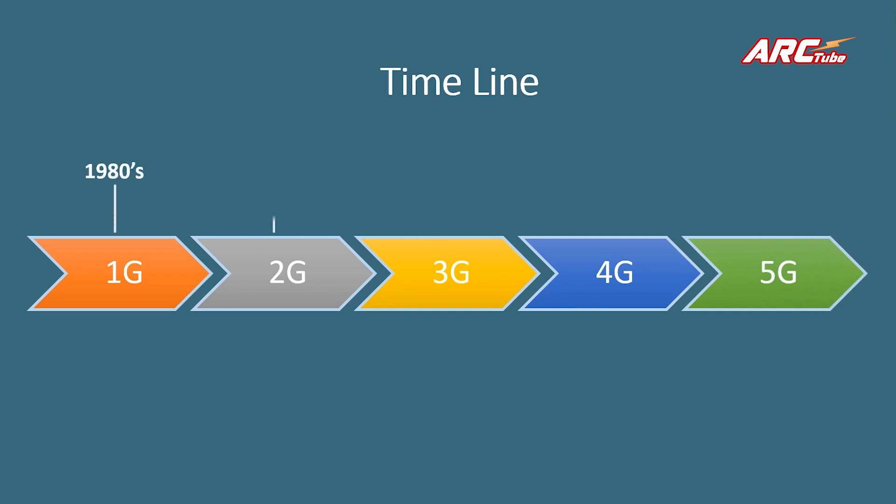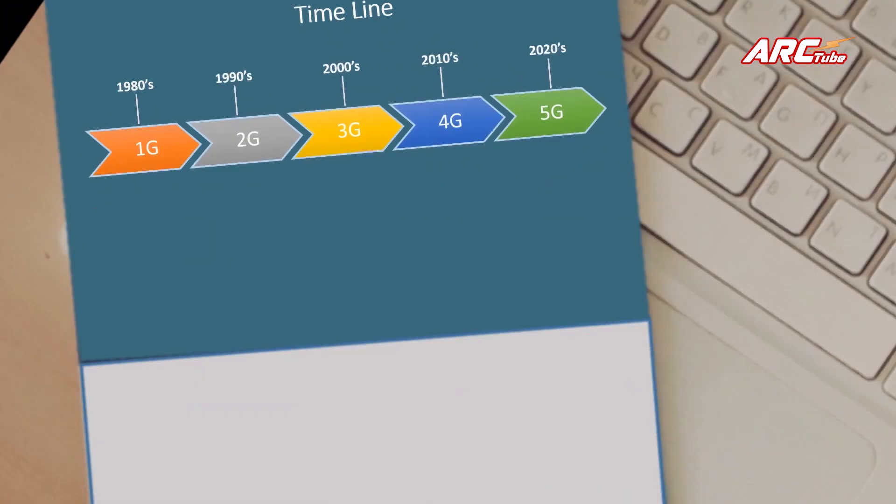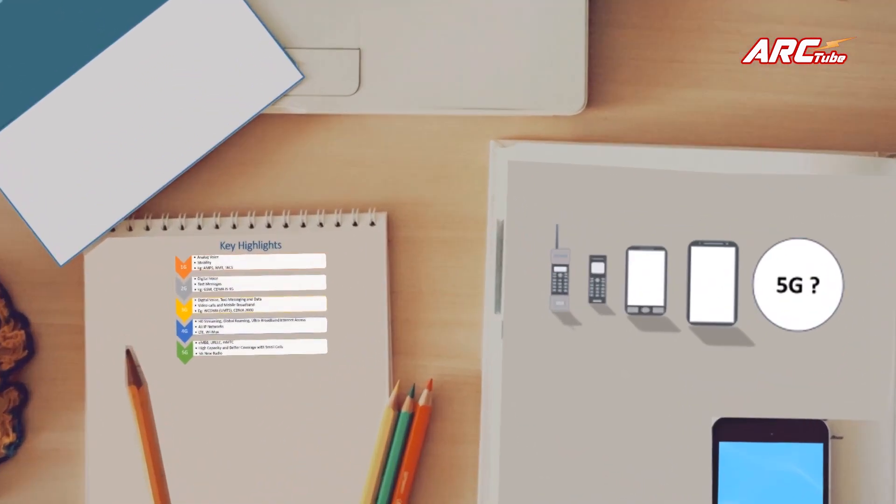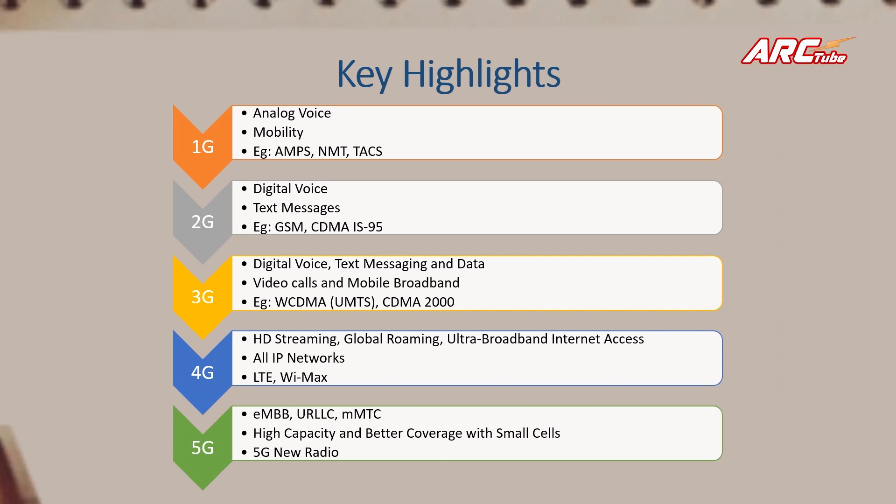Now let's look at what are the mobile generations which we had so far. As you can see here, there has been a leap in almost every 10 years. In each generation we see some new features as well as significant improvements to the drawbacks we have seen in their predecessors. Let's see what are the key highlights of each generation.